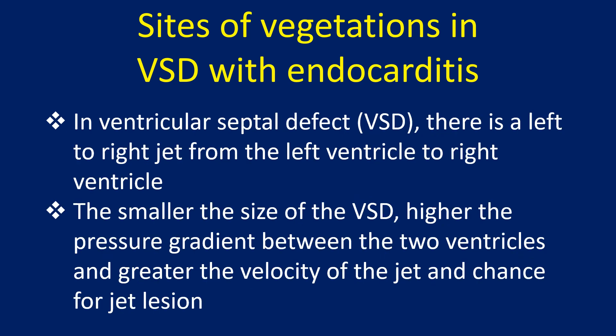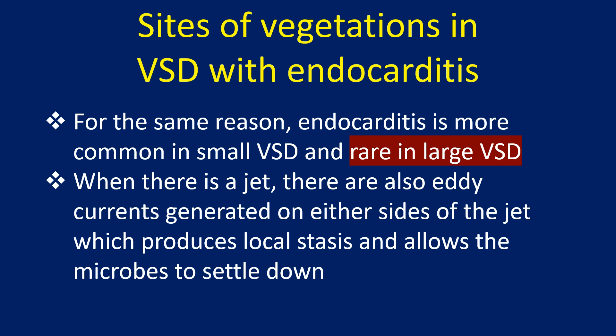In ventricular septal defect, there is a left-to-right jet from the left ventricle to the right ventricle. The smaller the size of the VSD, the higher the pressure gradient between the two ventricles, and greater the velocity of the jet and the chance for jet lesion. For the same reason, endocarditis is more common in small VSD and rare in large VSD.